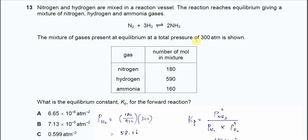The total pressure given is 300 atm. This is very important because you need to calculate the partial pressure of the reactants and products using this value.